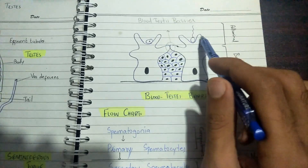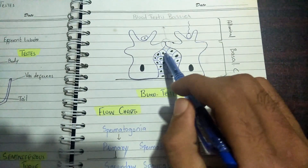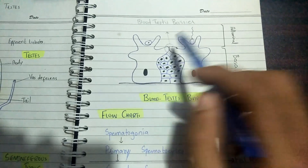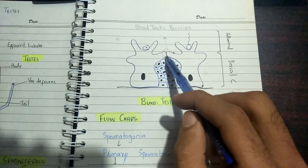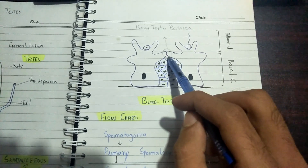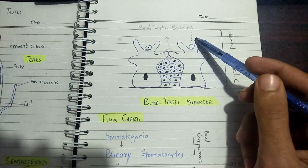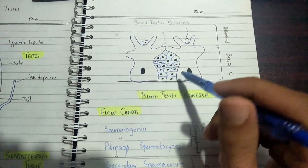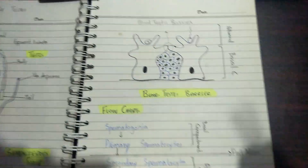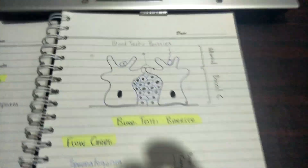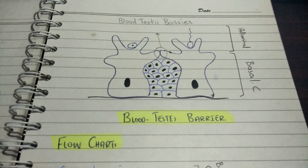The blood-testis barrier prevents the immune system from directly accessing the adluminal compartment. Nutrition reaches this compartment by simple diffusion. The barrier stops any immunological reaction that could be triggered when antibodies encounter spermatogonia or spermatids, because sperms are considered foreign bodies — even in the female body.